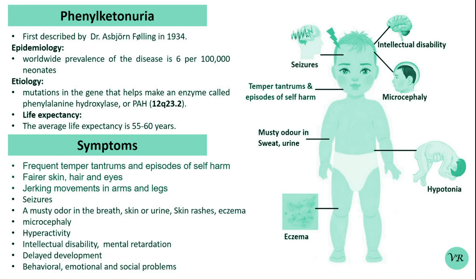Urine tests show increased levels of phenyl compounds such as phenyllactic acid and phenylpyruvic acid. These compounds are by-products of Phenylalanine metabolism and can be detected in the urine of individuals with PKU.